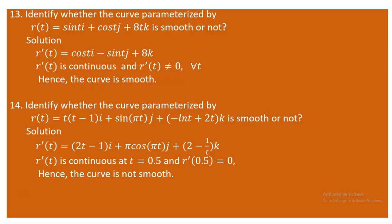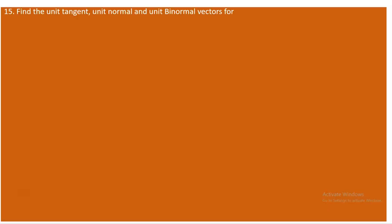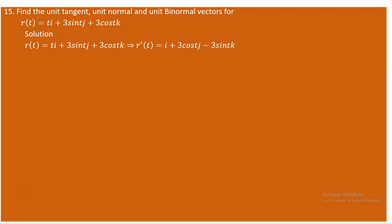Proceeding to question number 15. We are asked to find the unit tangent, unit normal, and unit binormal vectors for a curve parameterized by r(t) = ti + 3sin(t)j + 3cos(t)k. The first task is to find the derivative, since the unit tangent vector is derived from it.